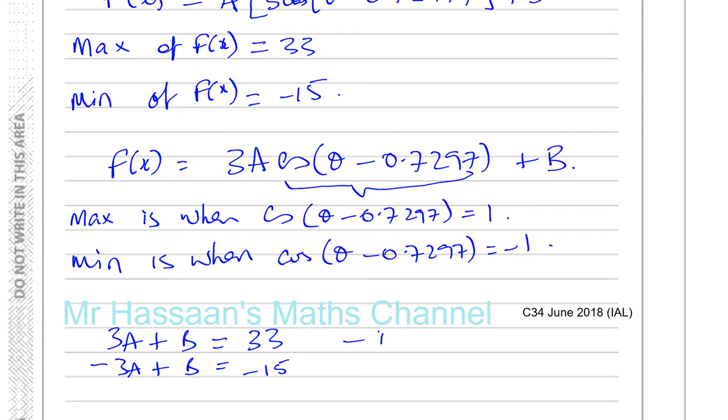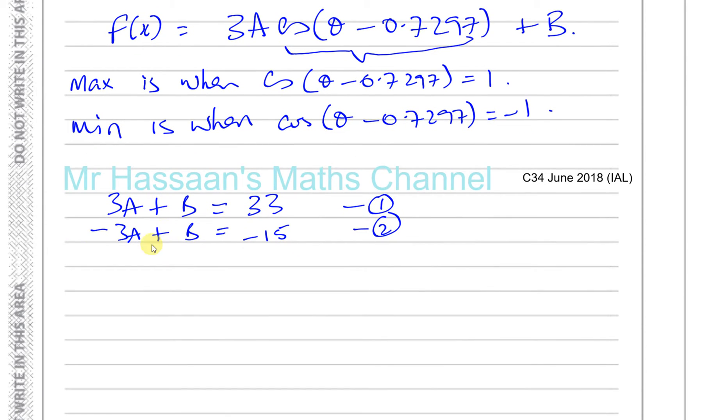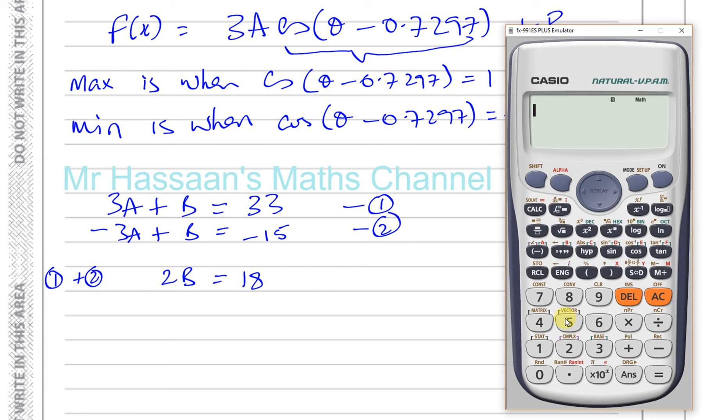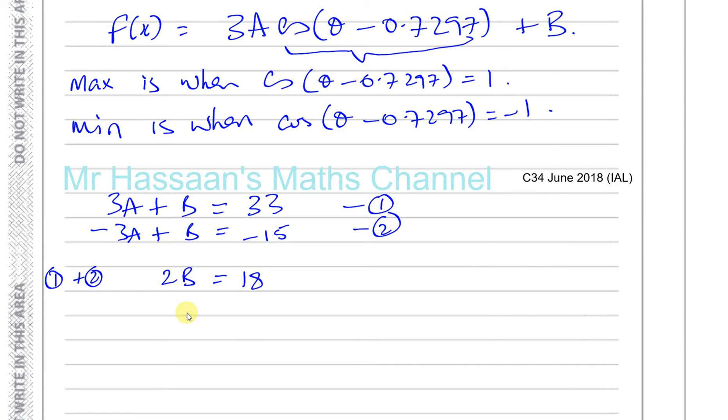We have a pair of simultaneous equations which we can solve. If we add them together, 1 plus 2, we're going to have this is going to disappear. So, you'll have 2B is equal to 33 minus 15, which is 18. So, B is equal to 9.